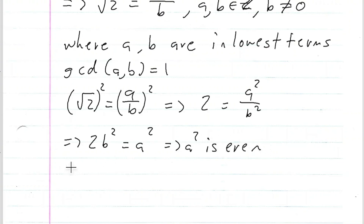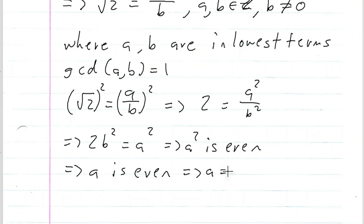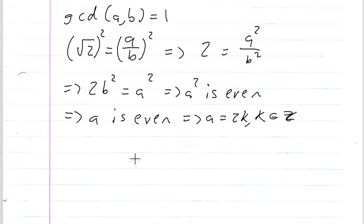Previously we proved that if A squared is even, then A is even. So if A is even, this means that A is equal to two K, where K is some integer.